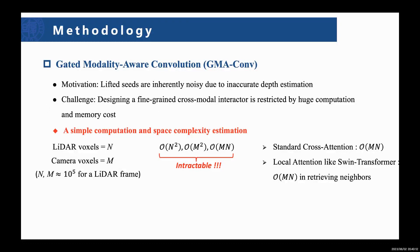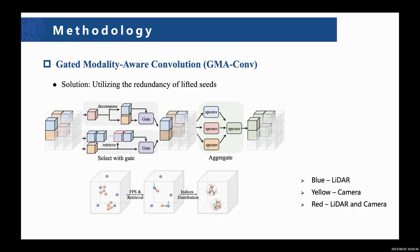As for the GME-COM, we notice that the lifted seeds are generally noisy due to inaccurate depth estimation and thus need to be further filtered. However, designing a fine-grained cross-modal interaction operation is largely restricted by huge computation and memory costs, as demonstrated by our complexity estimation for conventional attention-based operations — both are intractable in 3D voxel space. As shown in the figure, we split voxels into three groups according to their included modalities. For voxels with both LiDAR and camera features, we extract each component and use LiDAR information as guidance to filter the camera information with a gating operation. For voxels with only camera features, we retrieve the nearest LiDAR voxels as guidance for filtering. Since such retrieval is computation-expensive, we further devise an approximation retrieval strategy.